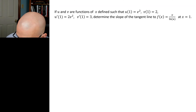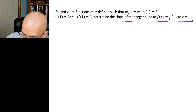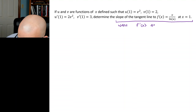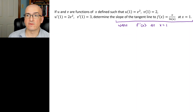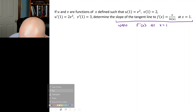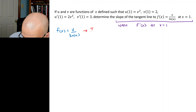Breaking this question down: the slope of the tangent line to f(x) at x = 1 is given by the derivative f'(x) evaluated at x = 1. So we want to find f' and then evaluate it at 1. f(x) = v / ln(u), and to take the derivative of this we're going to need a quotient rule.